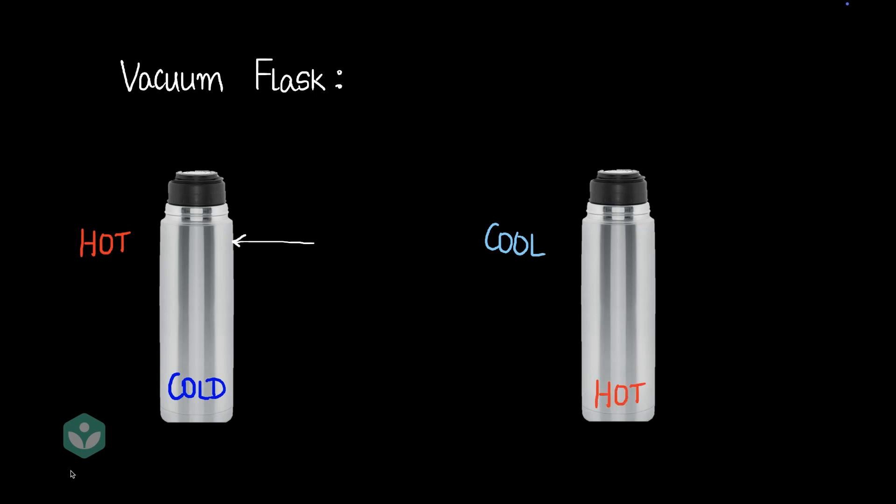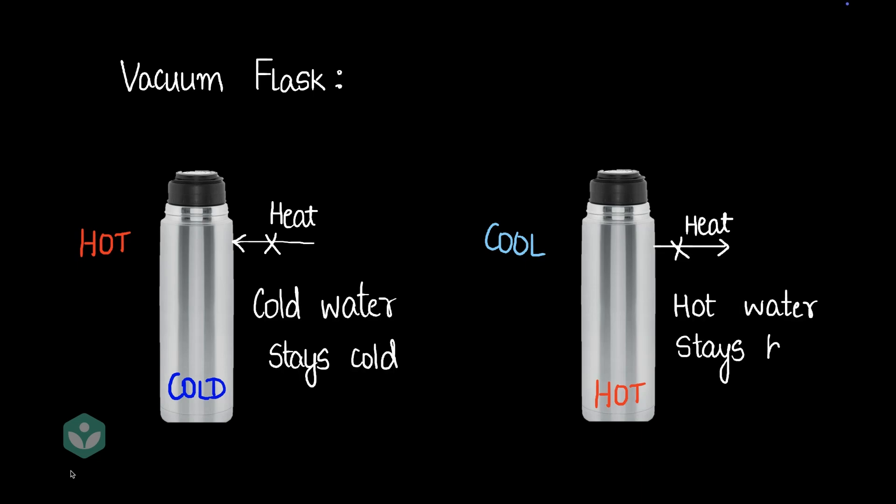What the flask achieves is to ensure that heat doesn't enter the flask here and that cold water stays cold, and heat doesn't exit the flask here, so that hot water stays hot.